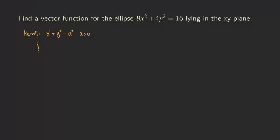The parametric equations for parameterizing the circle are x is equal to a times cosine of t, and y is equal to a times sine of t. Then t is between 0 and 2 pi, and t increases from 0 to 2 pi. This describes a motion starting from the point (a, 0), which lies on the positive x-axis, and the curve traces in the counterclockwise direction as t increases from 0 to 2 pi.